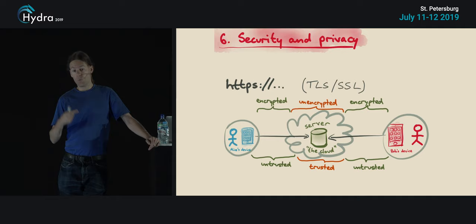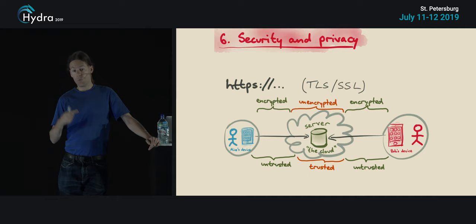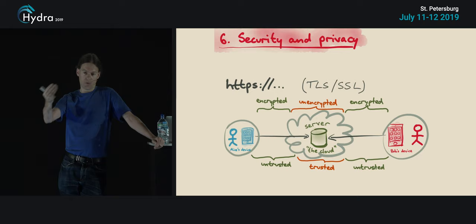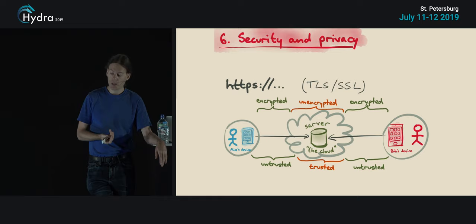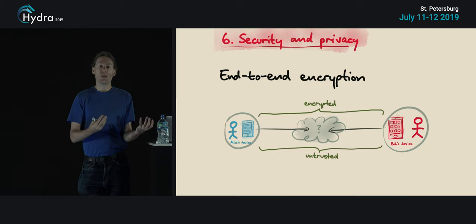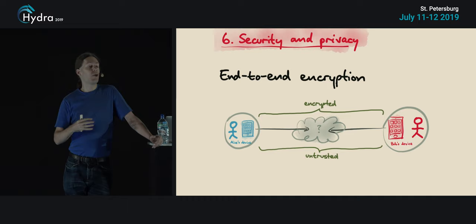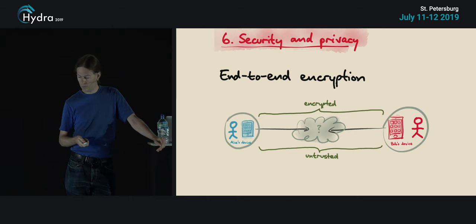Another point of local-first software is that we can improve the security model. In typical cloud software, you've got encryption between your end-user device and the server over HTTPS with TLS, but once you reach the data center, everything is unencrypted again, so you have to fully trust the data center. With the algorithms we've been developing, we can move to end-to-end encryption where data stored on any servers is still encrypted in a way that the servers cannot read, giving much better security properties.